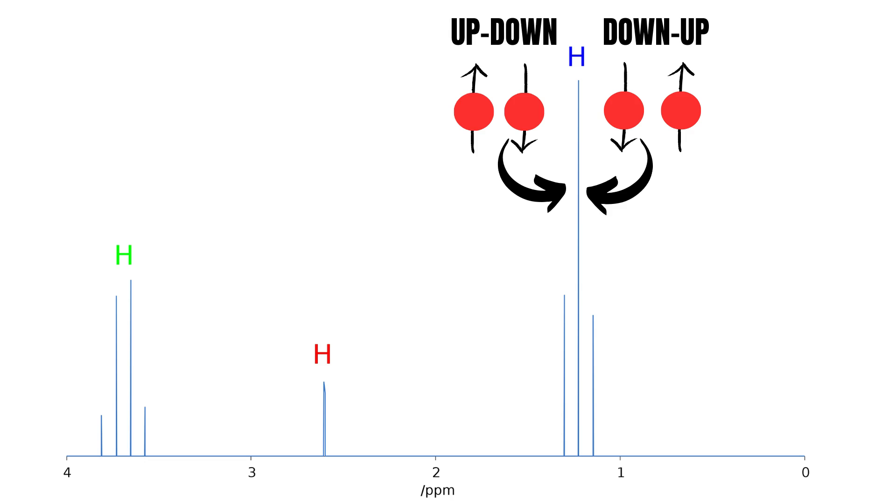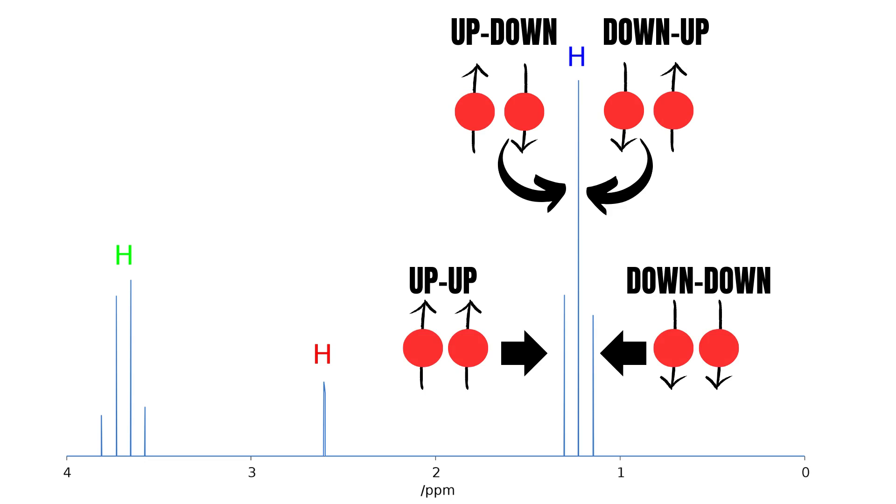Up-down and down-up will share the exact same location on the x-axis. Up-up will be slightly chemically shifted to the left, while down-down will be slightly chemically shifted to the right.